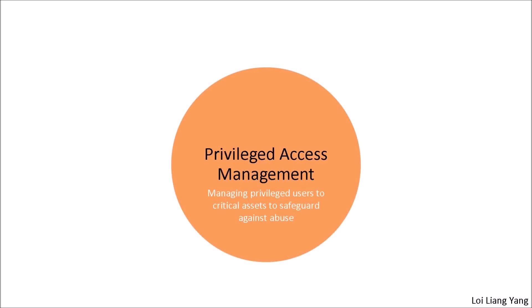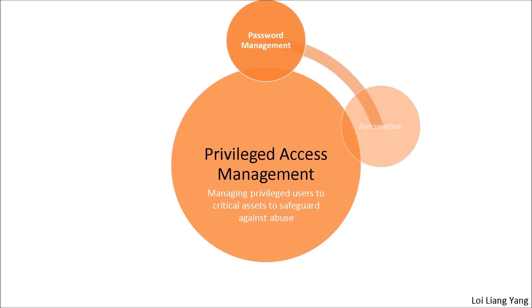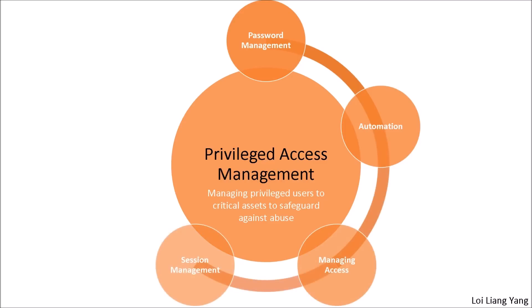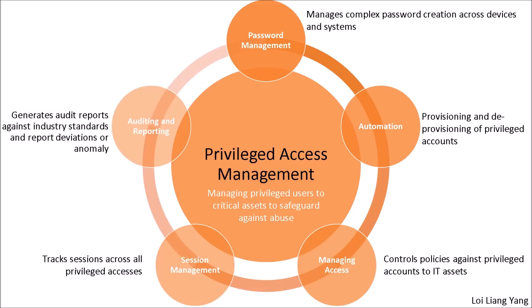To summarize today's lecture: privilege access management is meant to manage privileged users — system administrators, super users, and engineers — and safeguard against potential abuse or cybercrime. The first point covered is password management: managing complex passwords across many devices and systems through a centralized vault that safeguards passwords from decryption techniques. The second is automation: provisioning and deprovisioning privileged accounts for special projects or requirements, streamlining security operations.